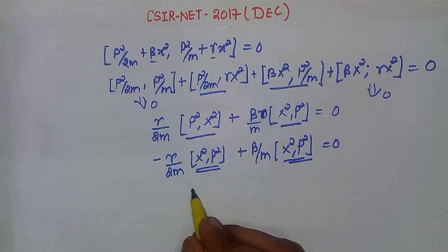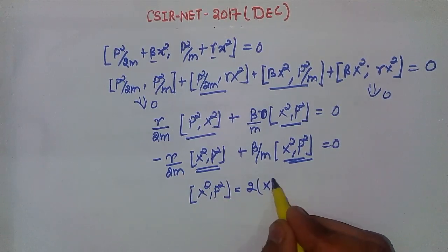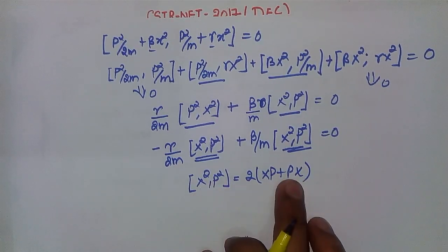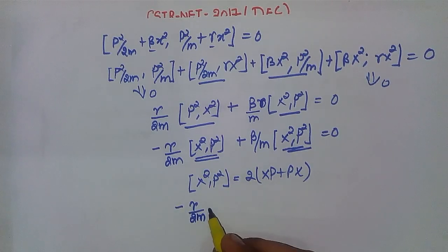The value of this commutator [X², P²] is 2iℏ(XP + PX). Using this relation, if we put this value, we get minus γ/2m times 2iℏ(XP + PX) plus β/m